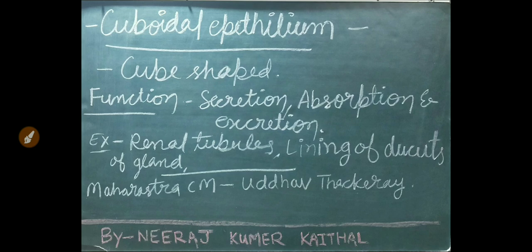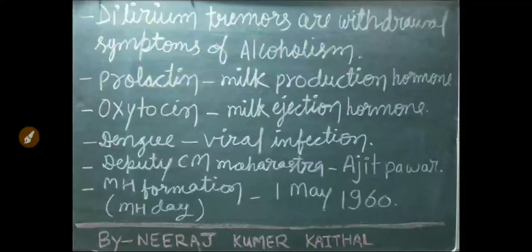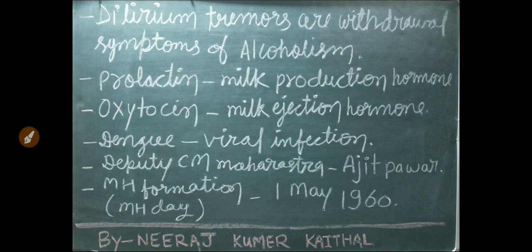The heart is a hollow muscular organ located in the mediastinum, which is the space between the lungs. During phototherapy, the eyes and genital area should be covered. Delirium tremens are withdrawal symptoms of alcoholism. Prolactin is the milk production hormone; oxytocin is the milk ejection hormone.